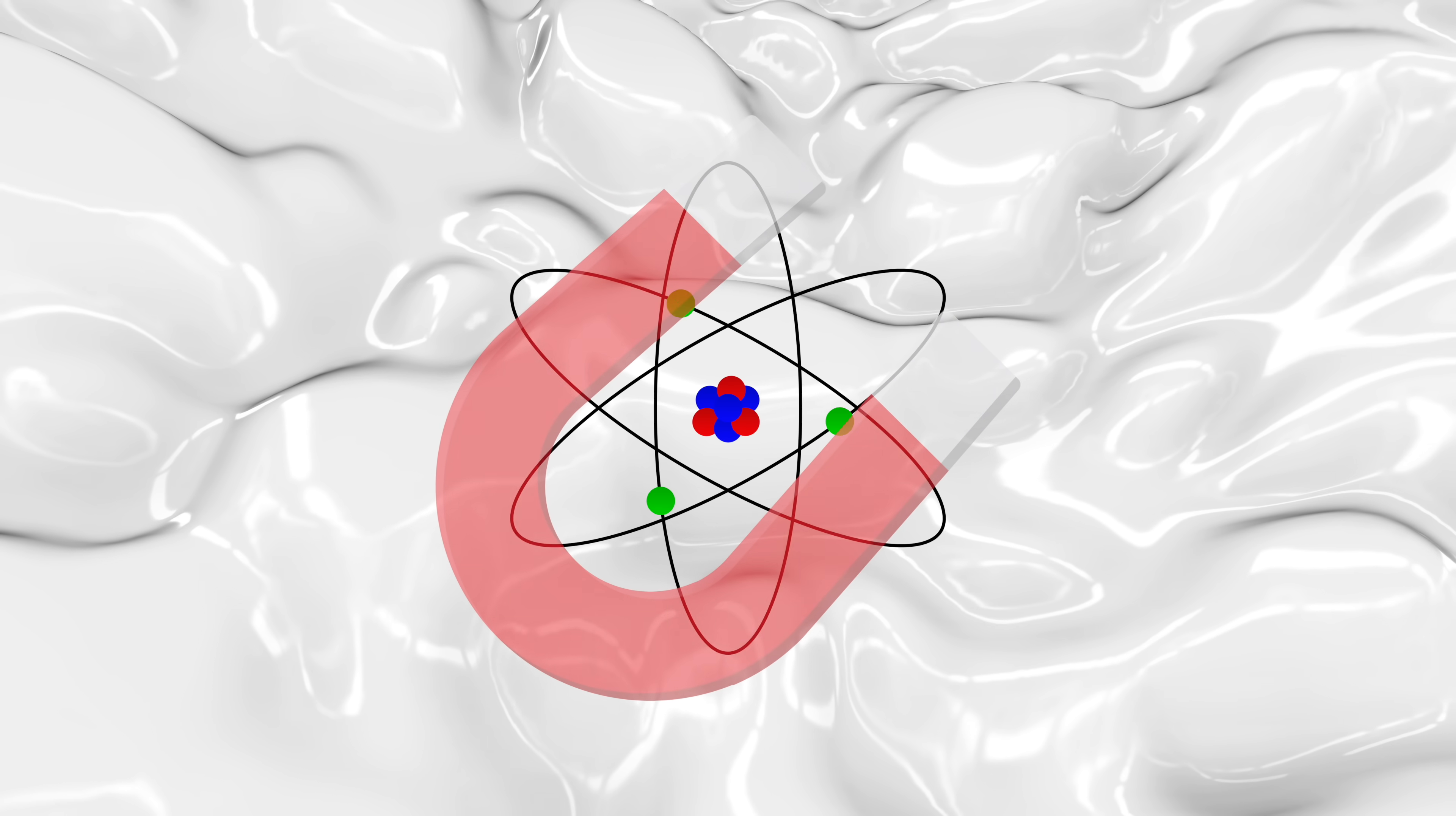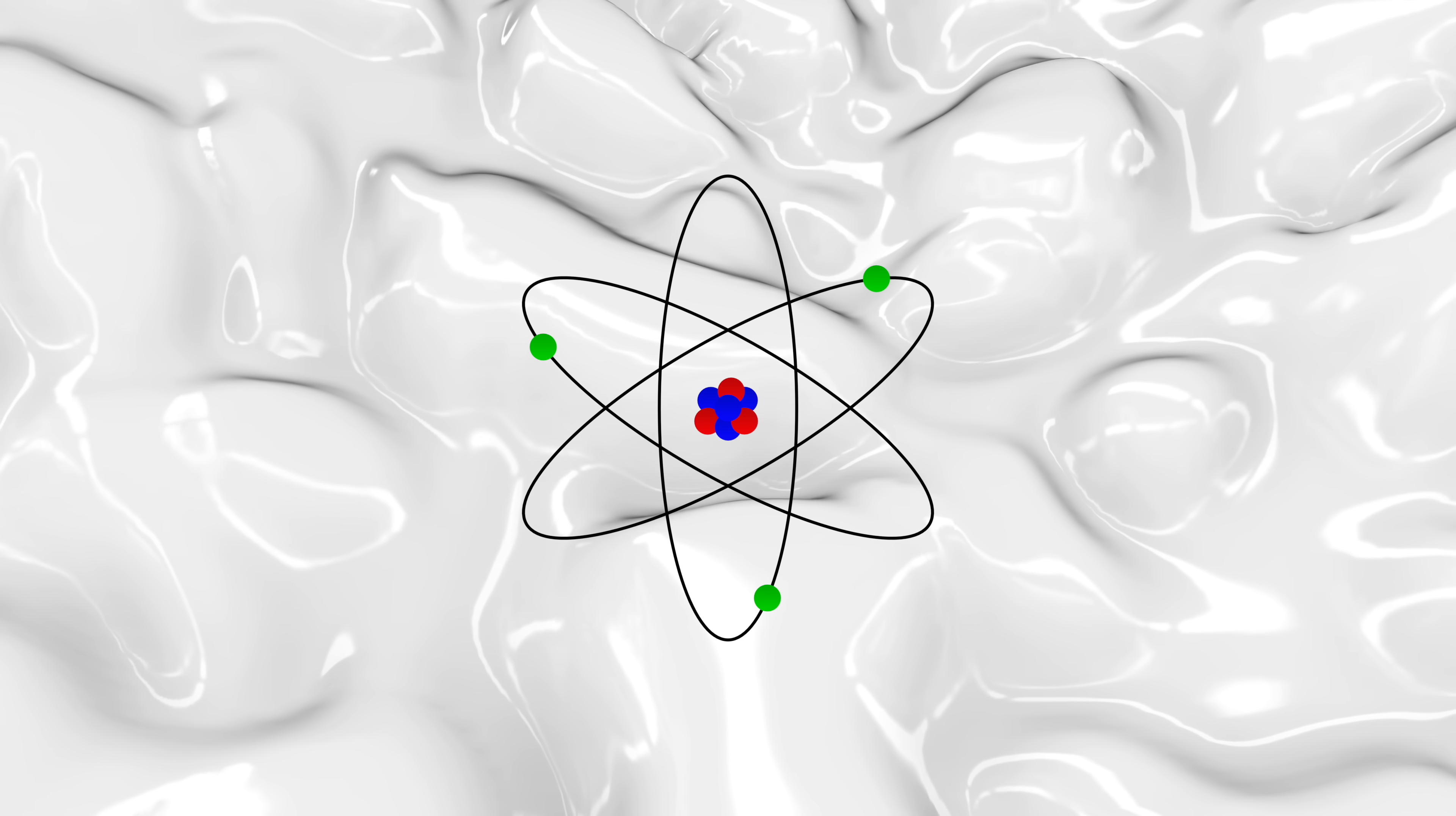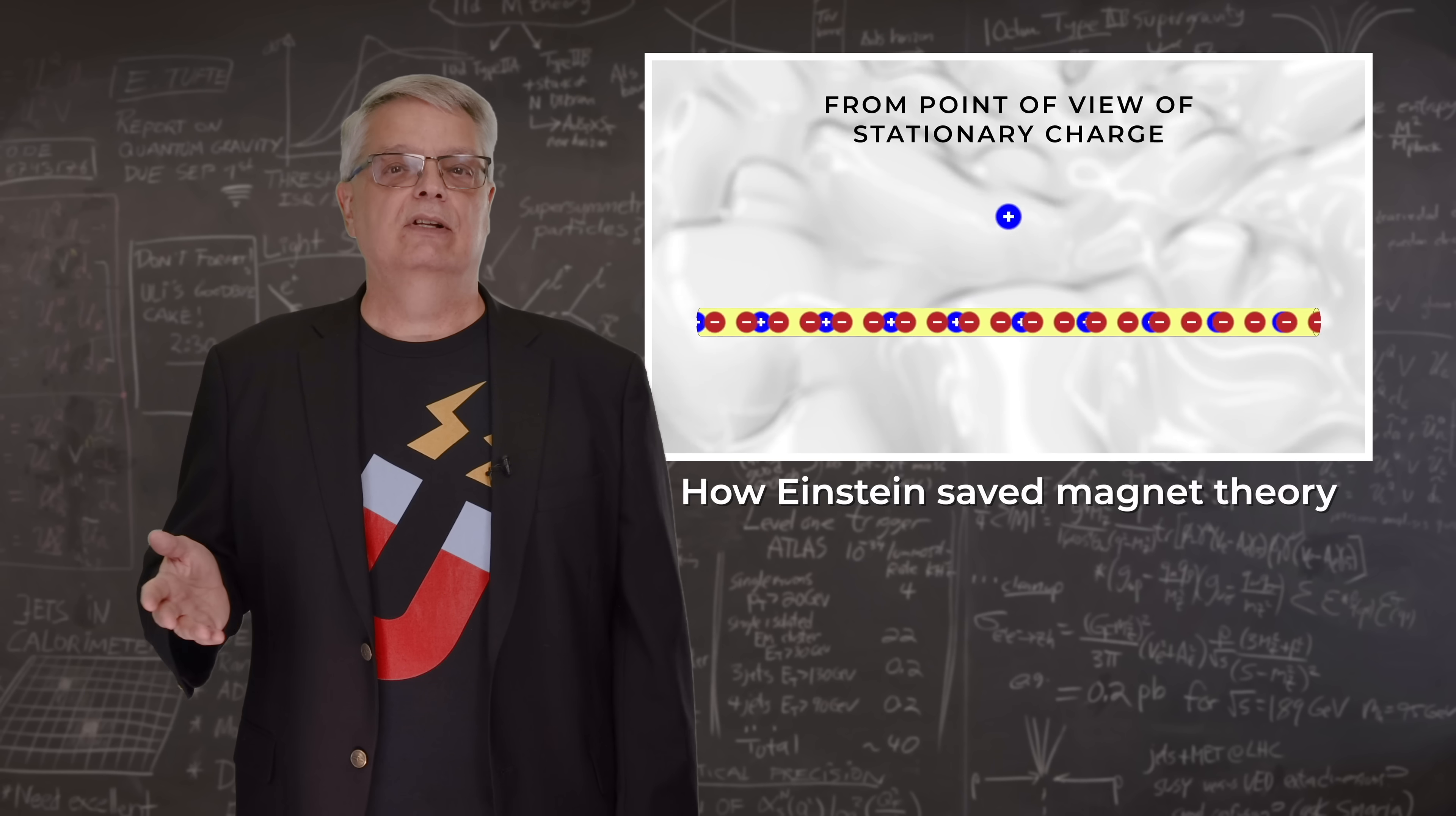Magnets are made of atoms and therefore the origins of magnetism must come from the atoms or the constituents of atoms and how they move. The relevant bits of atoms are electrons and protons, both of which have electric charge and both of which can move. Moving charges generate magnetic fields.